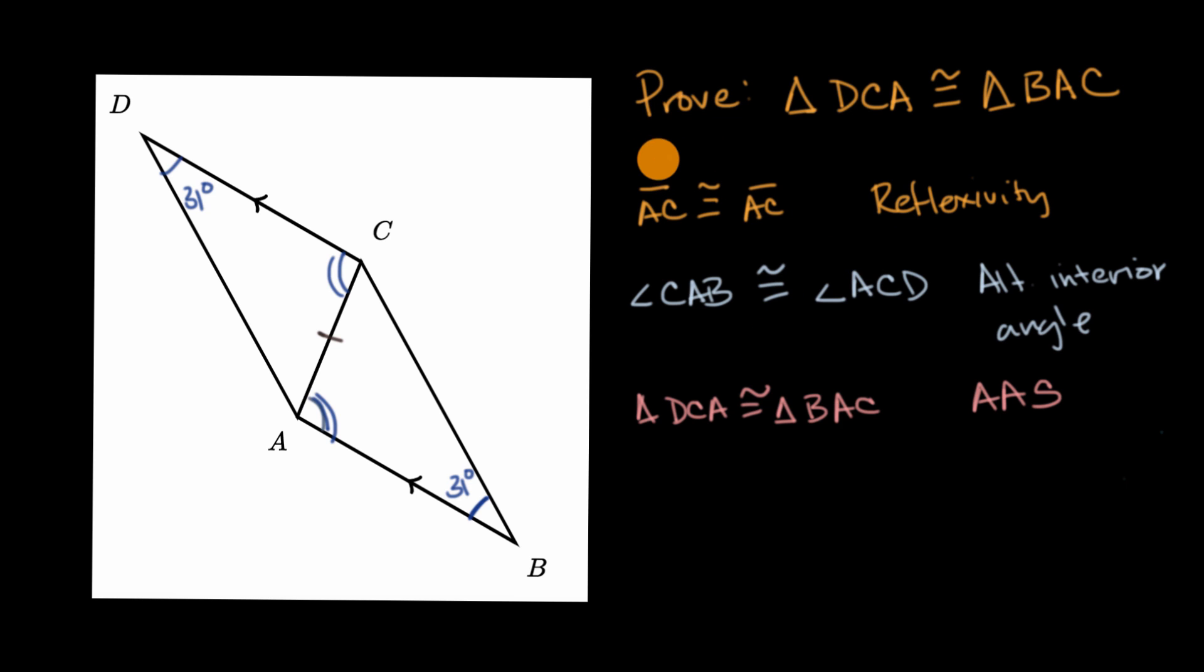And just to be clear, sometimes people like the two-column proofs. I can make this look a little bit more like a two-column proof by saying, these are my statements. Statement. And this is my rationale right over here. And we're done.